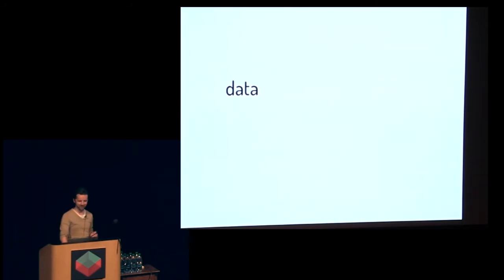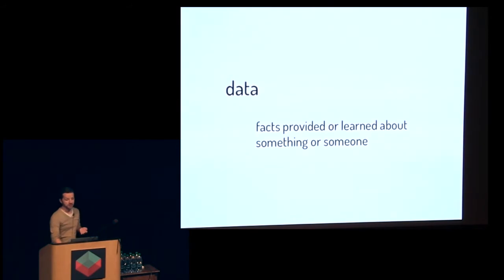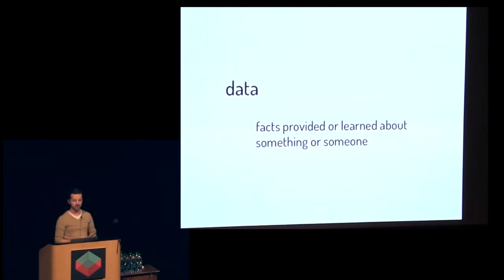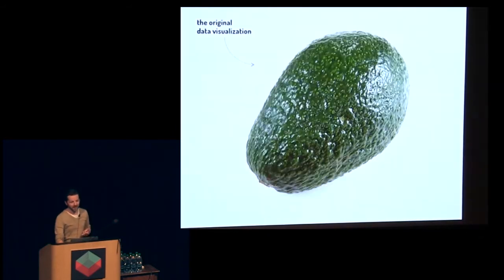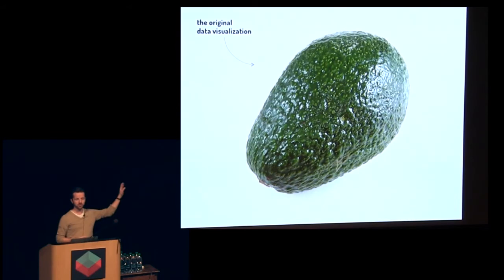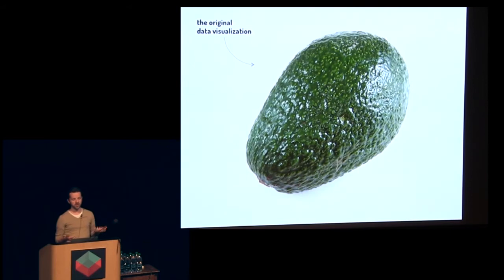Let's start at the start. What is data? Data means facts provided or learned about something or someone — information on an object, person, process, etc. While we only recently started raving about the power of data, the concept has been around always, because data is information about our surroundings. It lets us find food and shelter and spot predators. How do you gather this information about an object? Through visualization, of course — most objects provide an instant visualization of their properties, like this avocado giving you info about its size and whether it's been damaged.